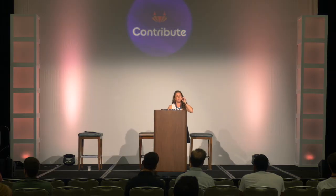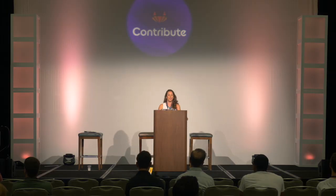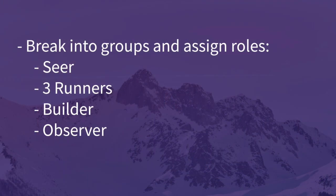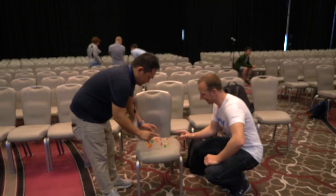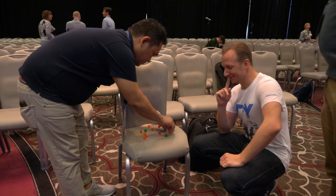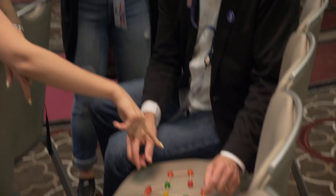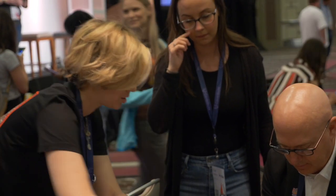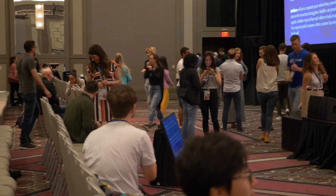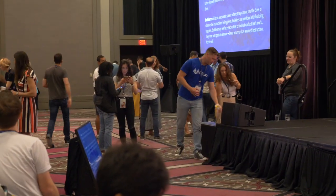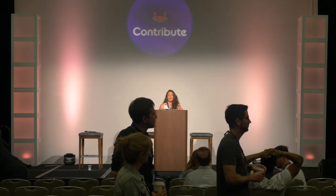Choose one seer, one builder, one observer, and the rest are runners. The seer sees the structure and describes it to the runners. The runners cannot ask questions — there's no back and forth, but you can use nonverbal cues. Runners run back and forth, taking what they've heard from the seer and describing it to the builder. The builder tries to put together an exact replica of the structure of gumdrops and toothpicks.